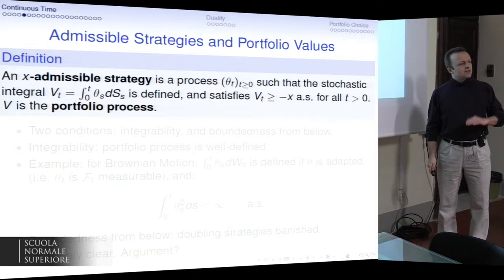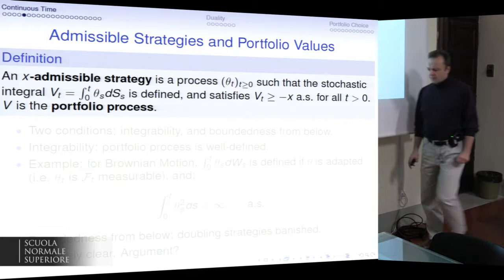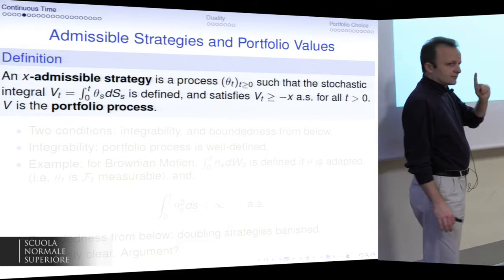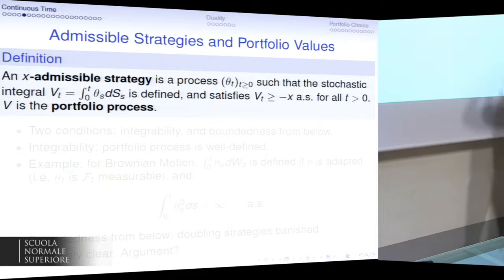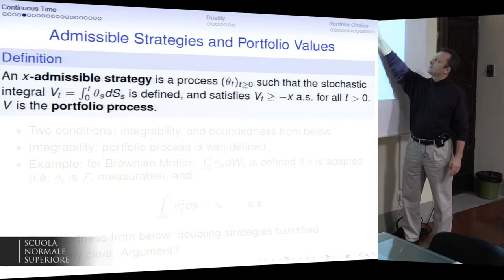Motivated by this example, we give the definition of admissible strategy. An admissible strategy is a process theta such that the stochastic integral V_t = integral of theta dS is defined. First condition: it must be integrable. Second condition: the resulting stochastic integral is greater than or equal to minus x, where x is a fixed constant, almost surely, for all times. V is defined as the portfolio process.